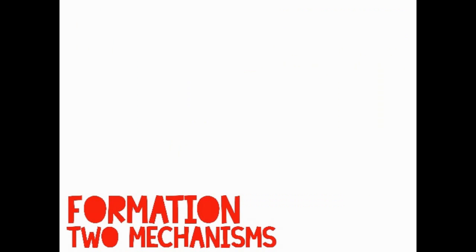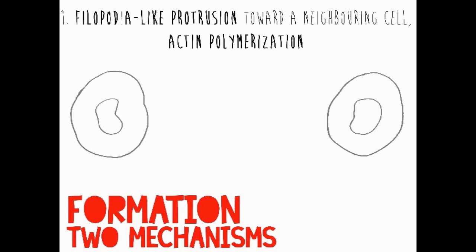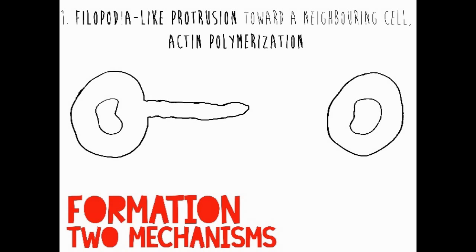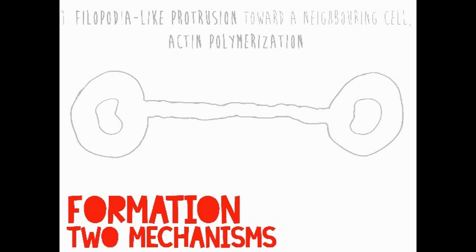There are two currently accepted mechanisms for the formation of tunneling nanotubes. First, these bridges are thought to be established by a directed outgrowth of filopodia-like protrusions towards a neighboring cell, most probably driven by actin polymerization. Essentially, one cell will form a bridge towards another cell.